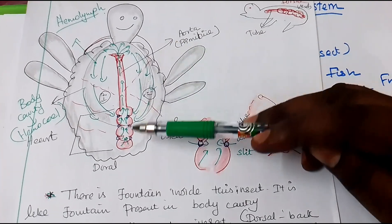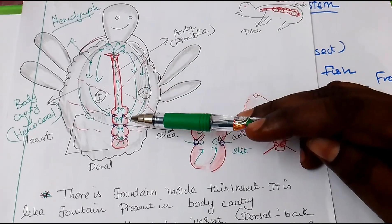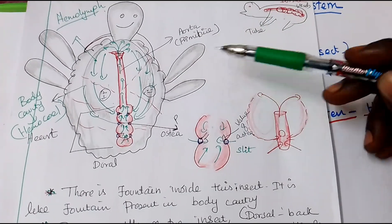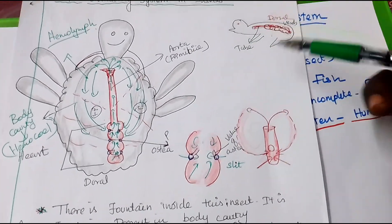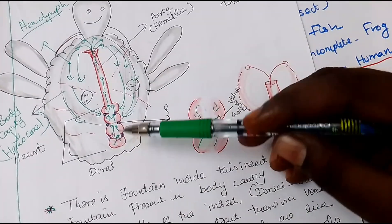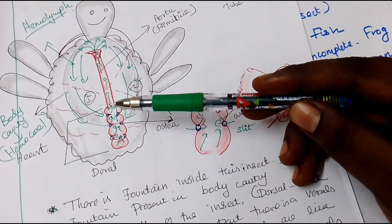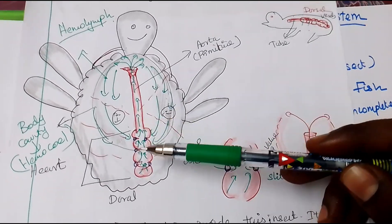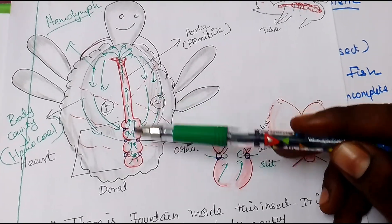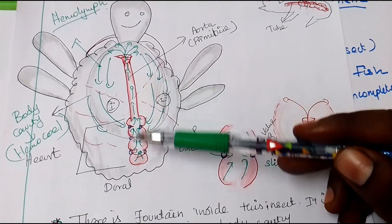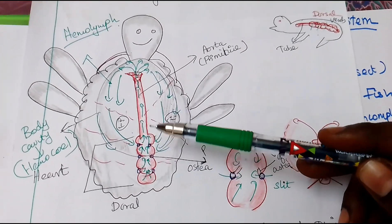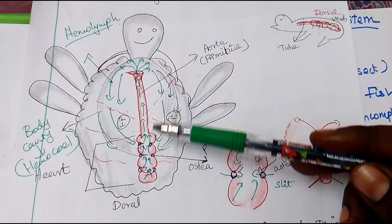This is the head and this is the dorsal portion of the insect. Insects usually have some segments in their body. There is a fountain-like apparatus present inside the insect in the dorsal part, which is acting like a heart of the insect.